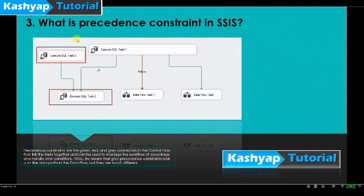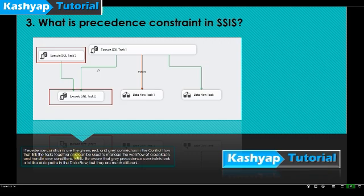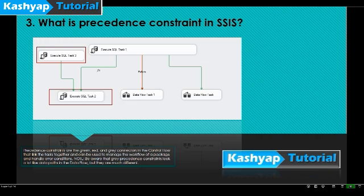The next question is: what are precedence constraints in SSIS? Precedence constraints are the green, red, and gray connectors in the control flow that link tasks together and can be used to manage the workflow of a package and handle error conditions. Note that gray precedence constraints look a lot like data paths in the data flow, but they are quite different. They enable developers to define a set of tasks logically and define the order of execution.